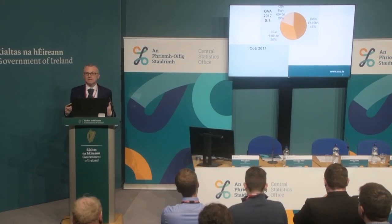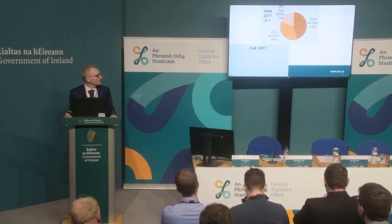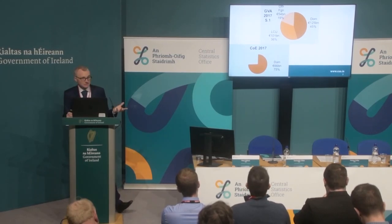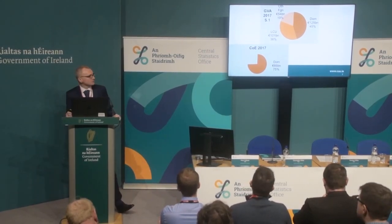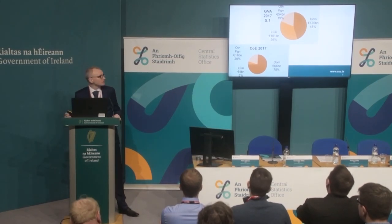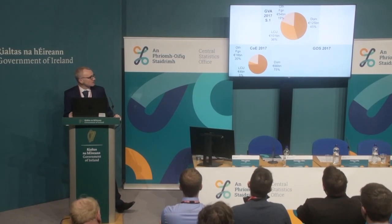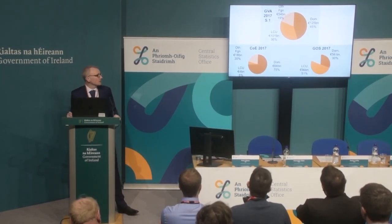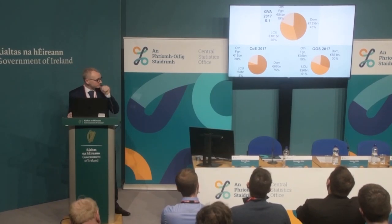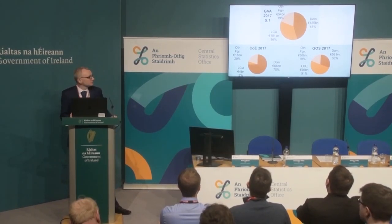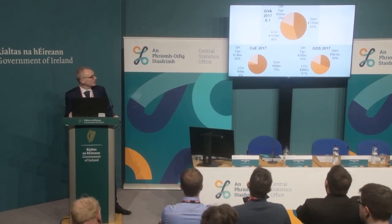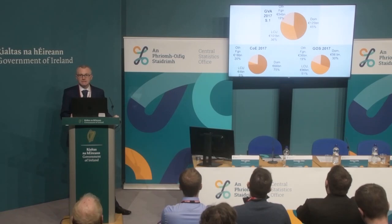When you break that down into compensation of employees — pay — and profits, the pie looks very different. 75% of compensation of employees is coming from domestic sectors: government, corporations, and to some extent households. LCU contribute 5% and the other foreign corporations 20%. And the other part of gross value added is the operating surplus, where domestic corporations have 30%. The majority is made by the large cases unit companies at 51%, and then the other foreign corporations have 19% of the profits made here.